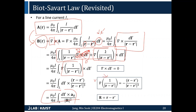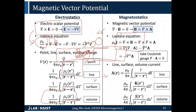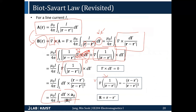Going back: we began with two governing equations — divergence of B equals zero, and curl of B equals mu_0 * J. By taking the Coulomb gauge, we wrote A in a simple integral form analogous to electrostatics. Since J and A satisfy the same Laplace equation as in electrostatics, we borrow those solutions. Taking the curl of A then recovers the Biot-Savart law.